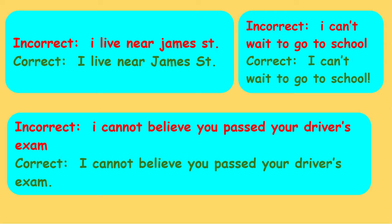Here is an example of an incorrect sentence: I live near James Street. I is lowercase, the J in James Street is lowercase, and the S in Street is lowercase, so these are all incorrect. Now let's look at the correct version: I live near James Street.